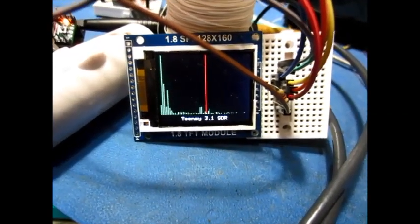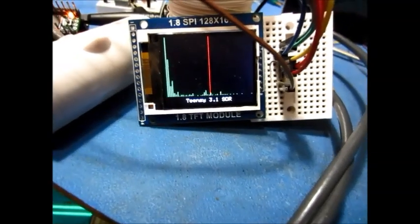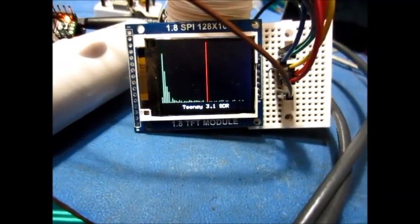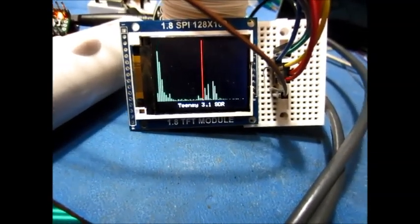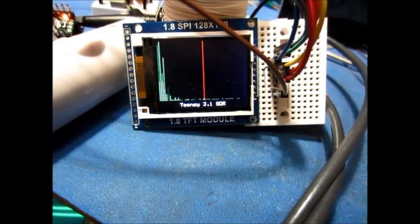This is another demo of the software-defined radio using the Teensy 3.1. This version is a little bit different—it implements image suppression or sideband suppression.